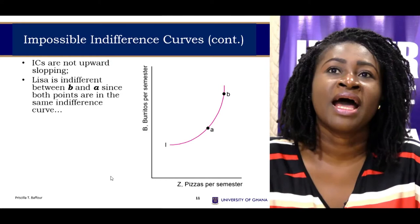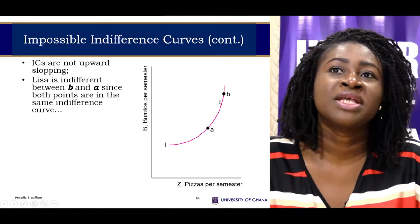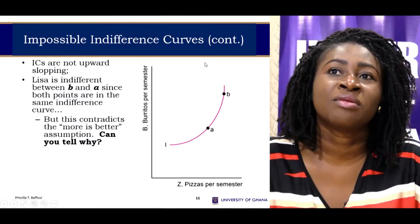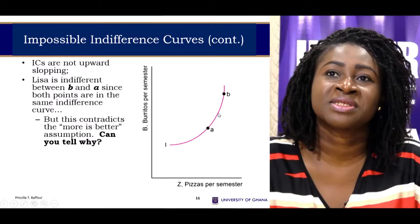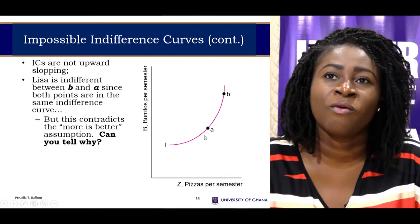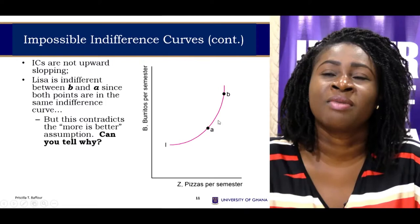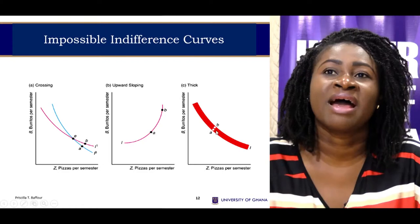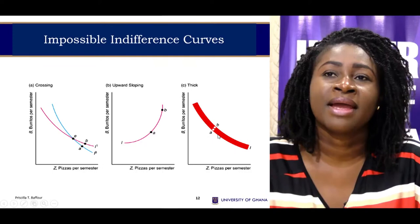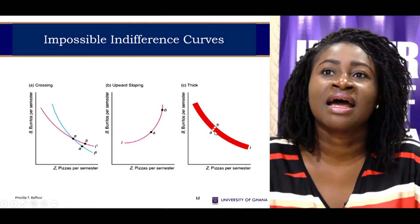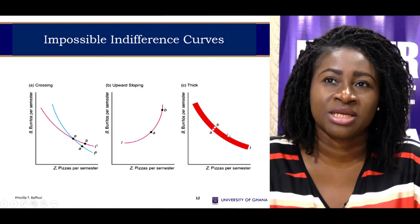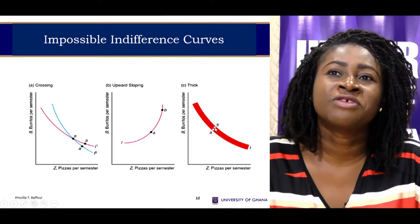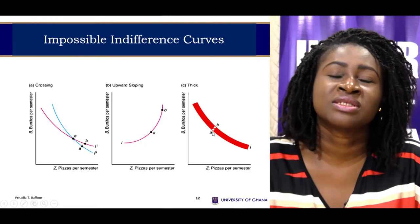Another impossible scenario is an upward-sloping indifference curve. In this case, point B is a more superior point to point A, yet both lie on the same indifference curve — which is impossible since a rational consumer would obviously choose B over A rather than be indifferent. A third impossible scenario is a thick indifference curve: because indifference curves are everywhere dense, a thick curve would allow two different points to be plotted where one is clearly superior, which also should not exist.